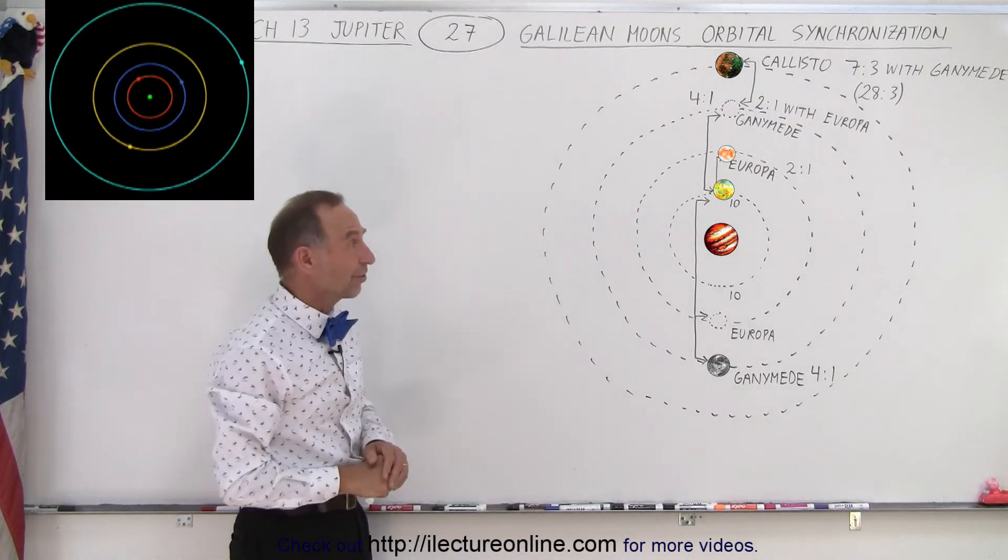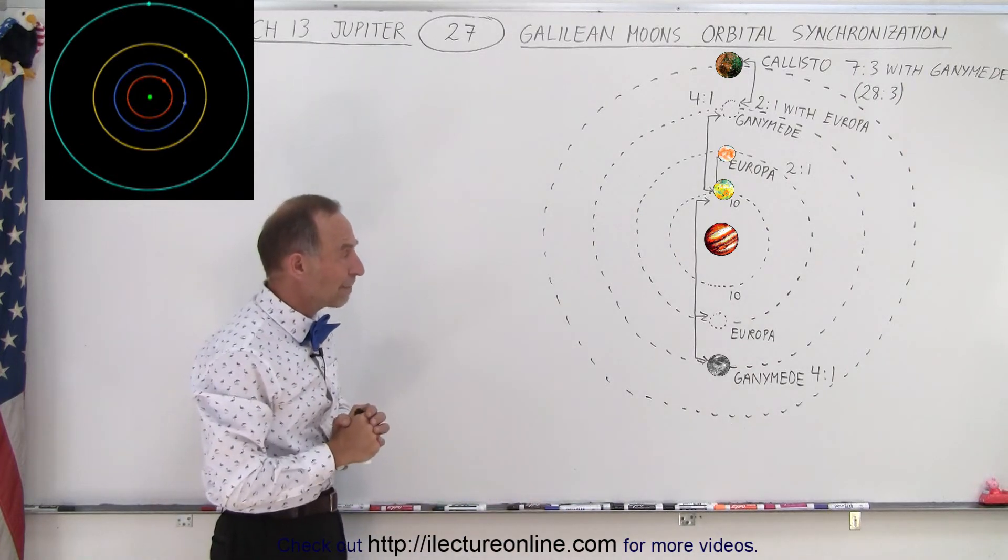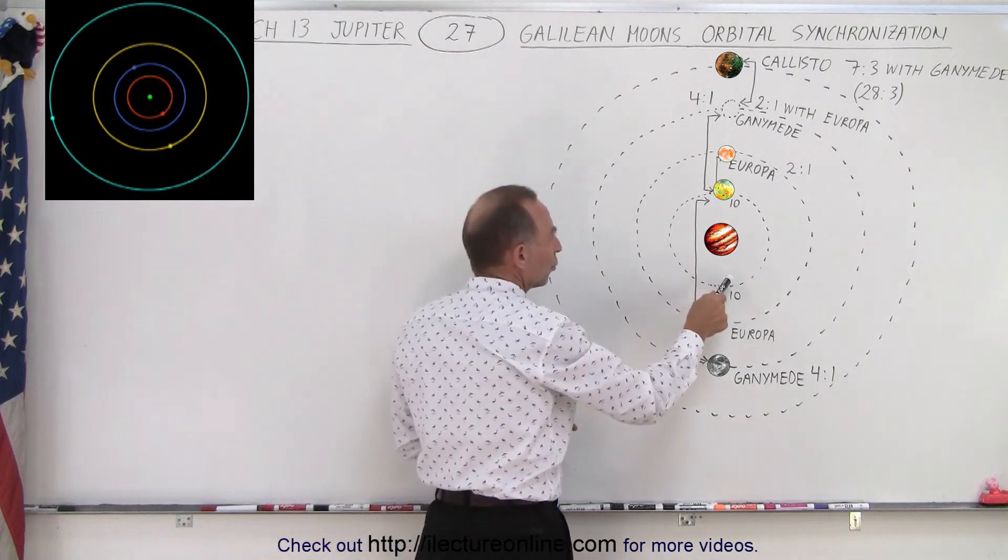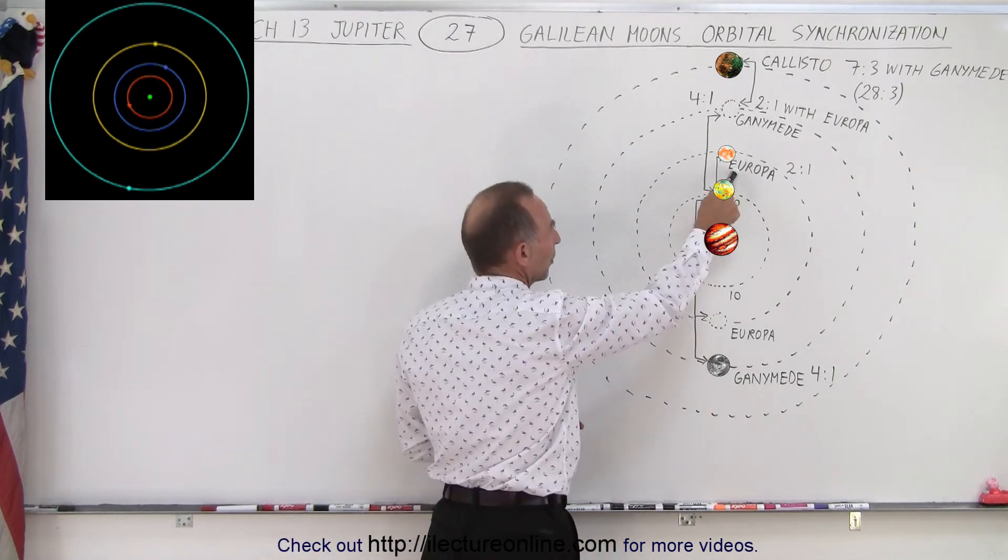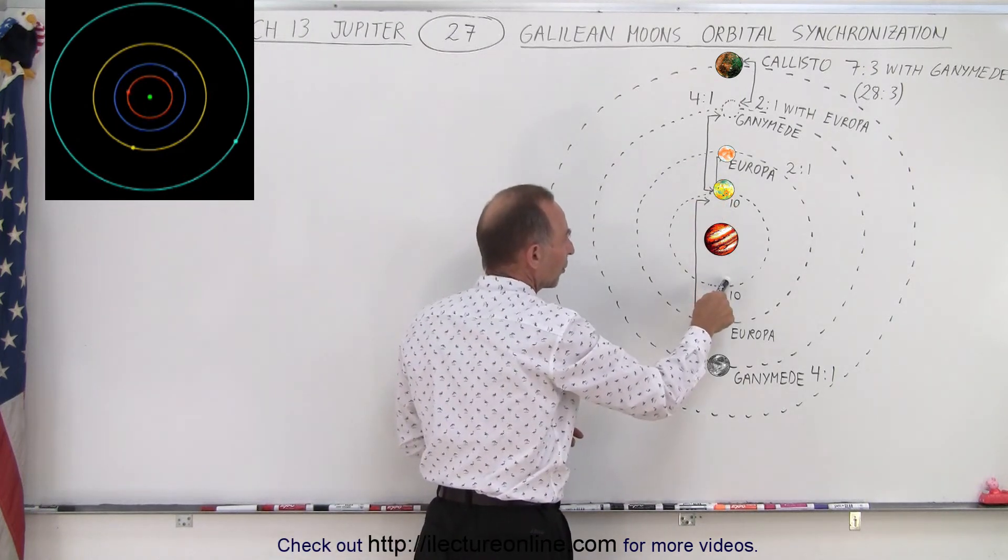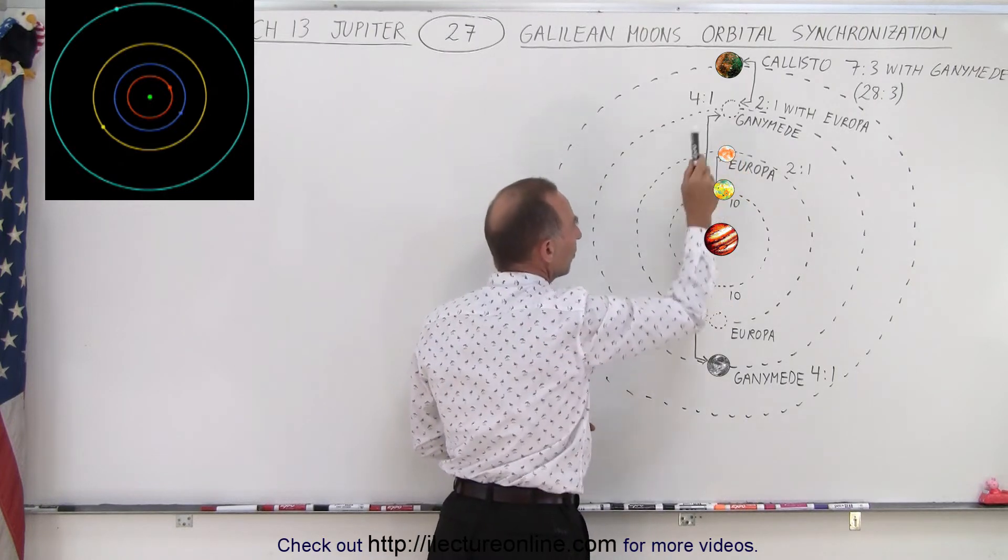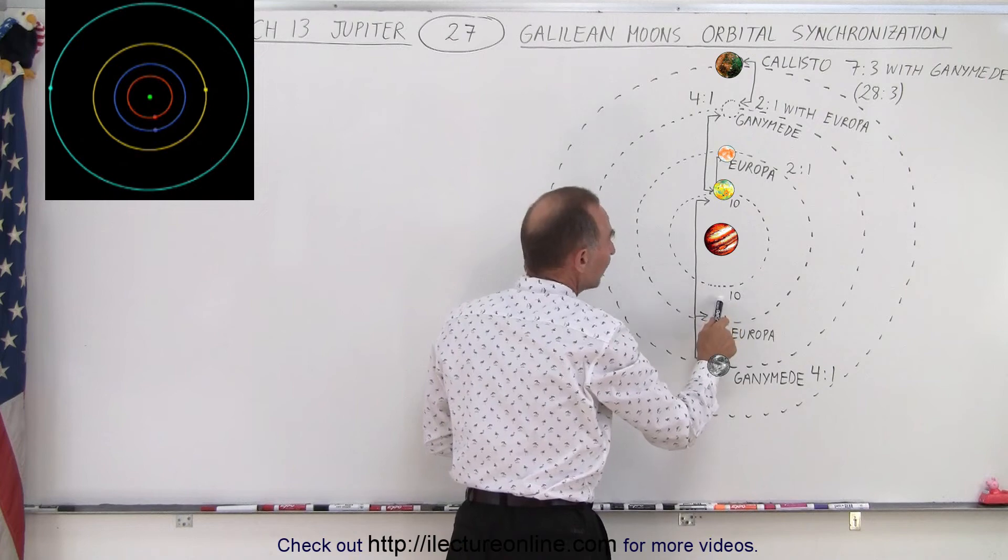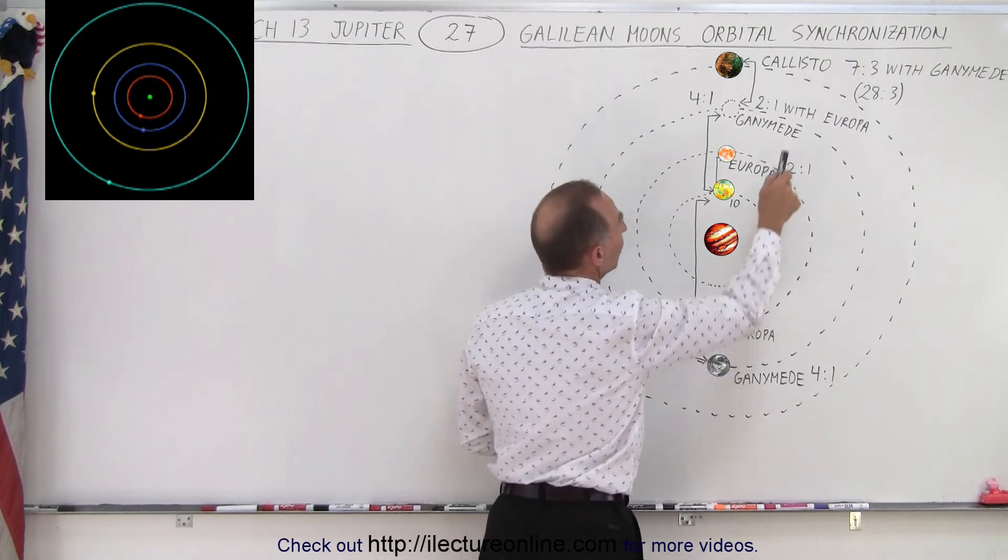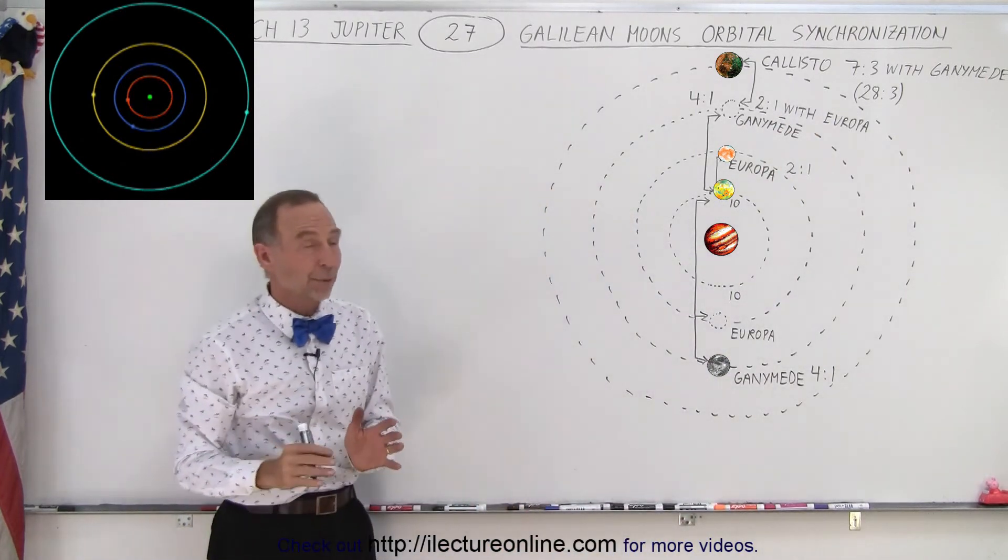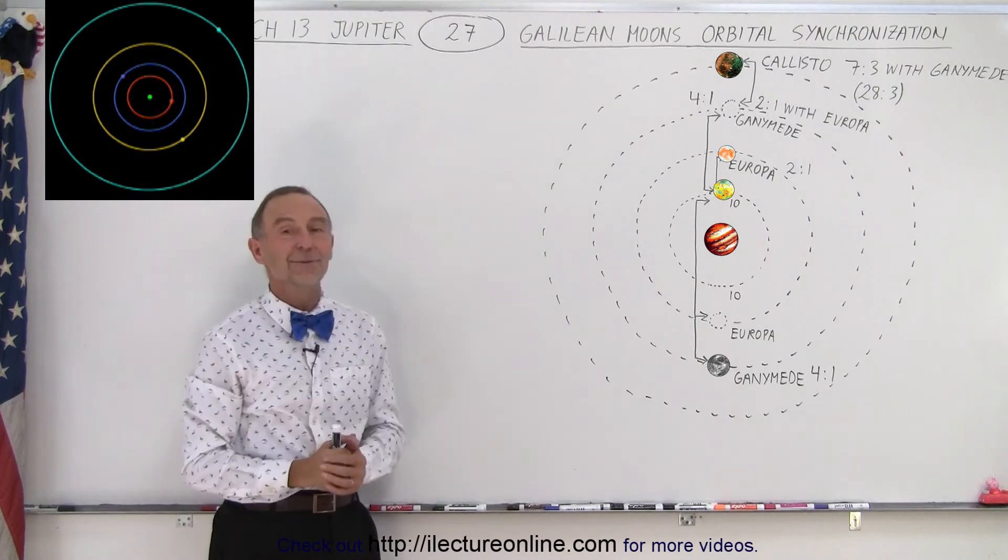So it's quite interesting that that's what's happening. Again, for every two orbits of Io, Europa orbits once. For every four orbits of Io, Ganymede orbits once. And for every 28 orbits of Io, Callisto orbits three times. And that's the orbital relationship between these moons.